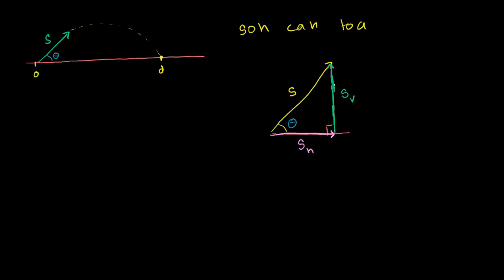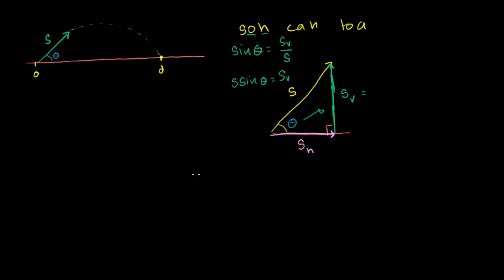So what's the vertical component going to be? The vertical component is opposite this theta, and we know the hypotenuse is s, so we use sine because that deals with the opposite and the hypotenuse. The sine function tells us that sine of theta is going to be equal to the opposite side — which is the magnitude of our vertical velocity — over our hypotenuse s. So if we want to solve for the vertical component of our velocity, we multiply both sides by s, and we get s sine of theta is equal to the vertical component of our velocity.